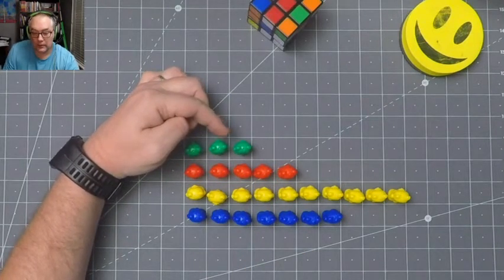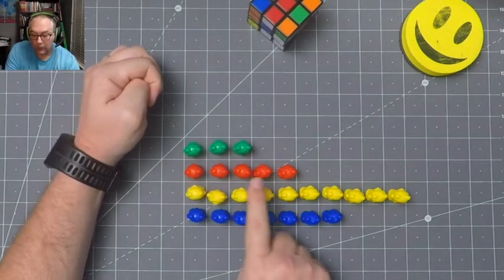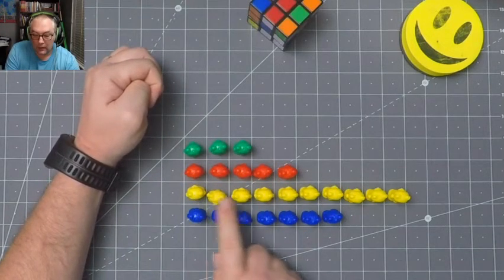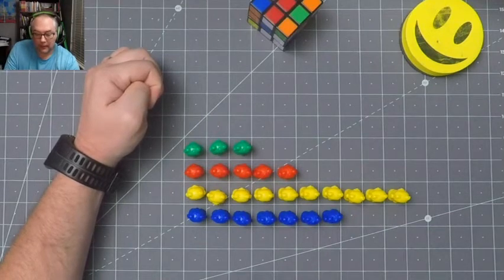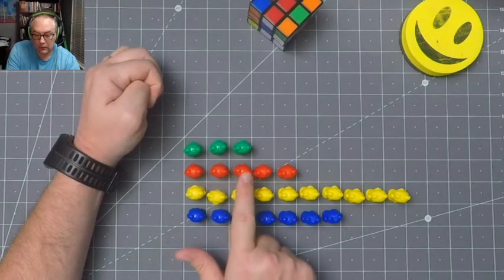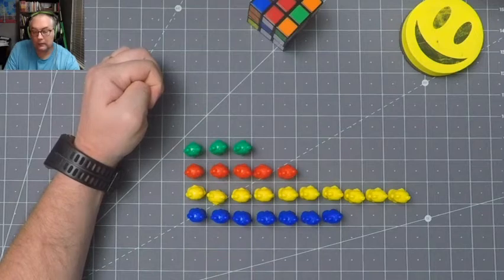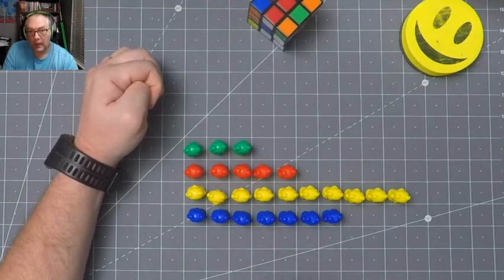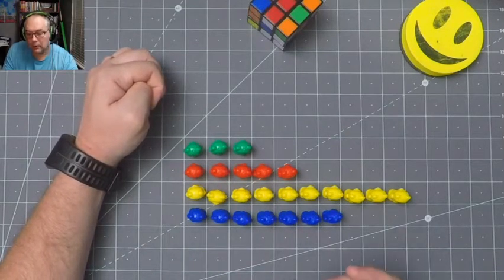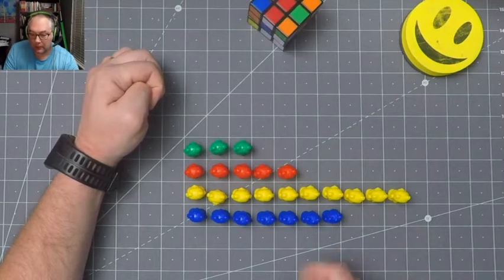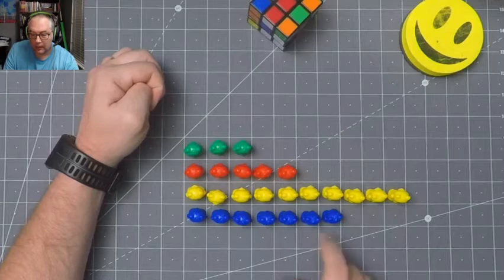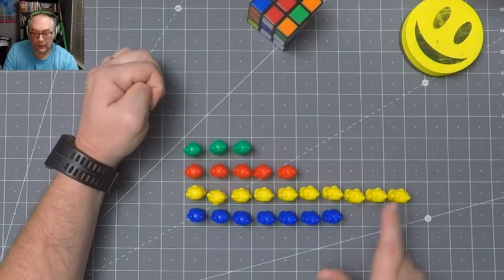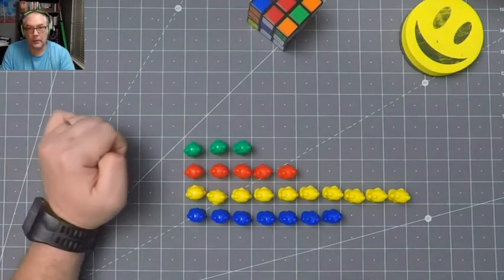So what is the difference between the red bears and the yellow bears? Let's have a count. 1, 2, 3, 4, 5. So we have 5 red bears. And how many more yellow bears do we have than red bears? 1, 2, 3, 4, 5. So there are 5 more yellow bears than there are red bears.